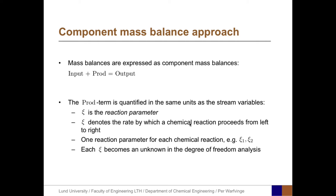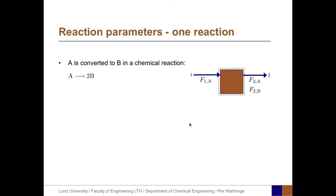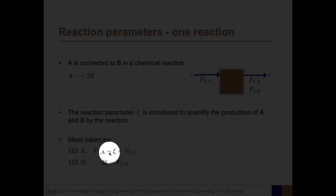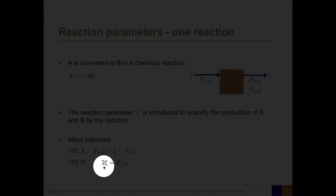Each reaction parameter becomes an unknown in the degree of freedom analysis. Let us look into how to apply the reaction parameter. Starting with one reaction: A is converted to B, A yields 2B. The reaction parameter xi is introduced to quantify the production of A and B. The mass balance for A becomes F1A minus xi equals F2A, while the mass balance for B becomes 2xi equals F2B.